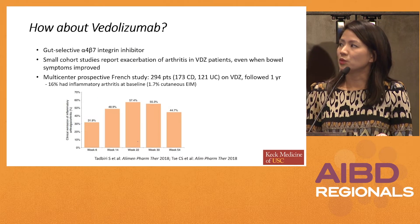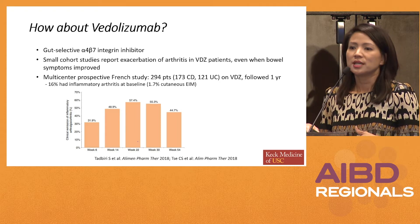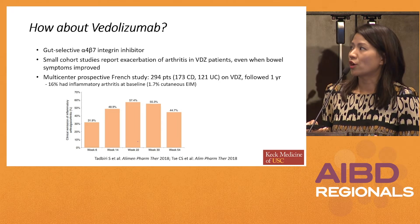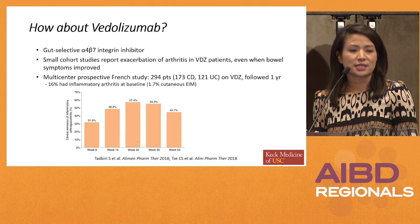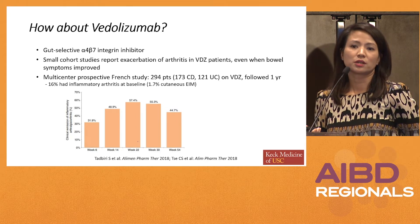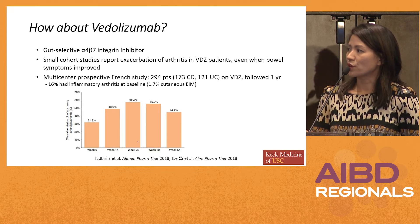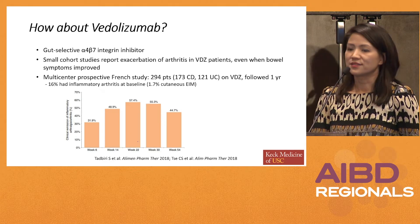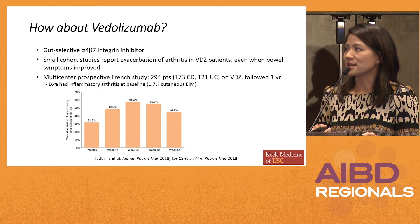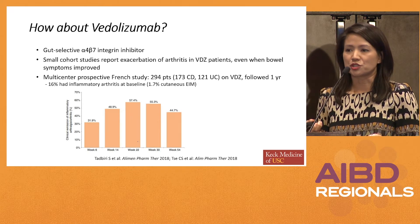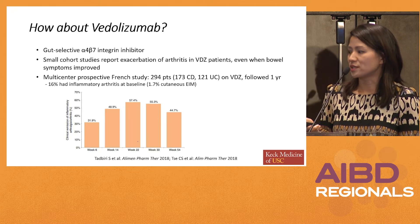What about vedolizumab? We all know this is the gut-selective integrin inhibitor. Earlier cohort studies suggested that vedolizumab could unmask or exacerbate arthritis in our IBD patients even when bowel symptoms were improved. However, reassuringly, a recent multi-center French study including close to 300 patients started on vedolizumab and followed for a year found that among patients who had inflammatory arthritis, between 45% and 58% had their arthritis in remission over that time period — pretty decent numbers compared to other biologics used for peripheral arthritis. So I don't think vedolizumab is a contraindication for our patients with significant arthritis.